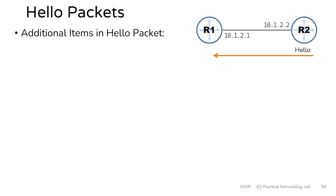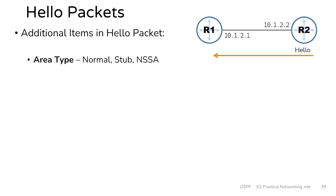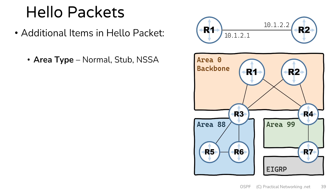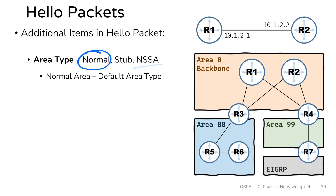The first of the additional items inside a hello packet is the area type. There are three options for area type: normal, stub, and NSSA. We're going to use the same topology we used when we discussed areas back in lesson two. The first type of area is a normal area, which is actually the default area type — meaning if you don't explicitly tell an area that it is a stub or NSSA area, it'll assume to be a normal area. In a normal area, every type of route is allowed.